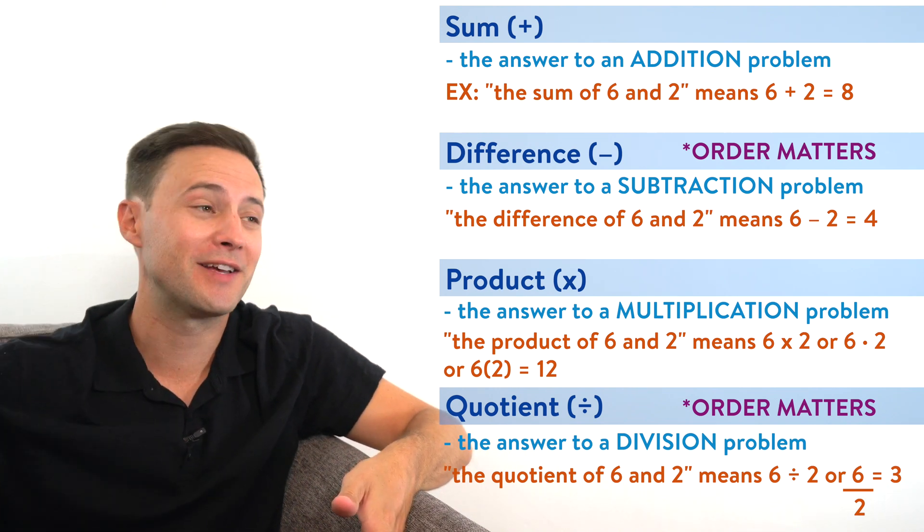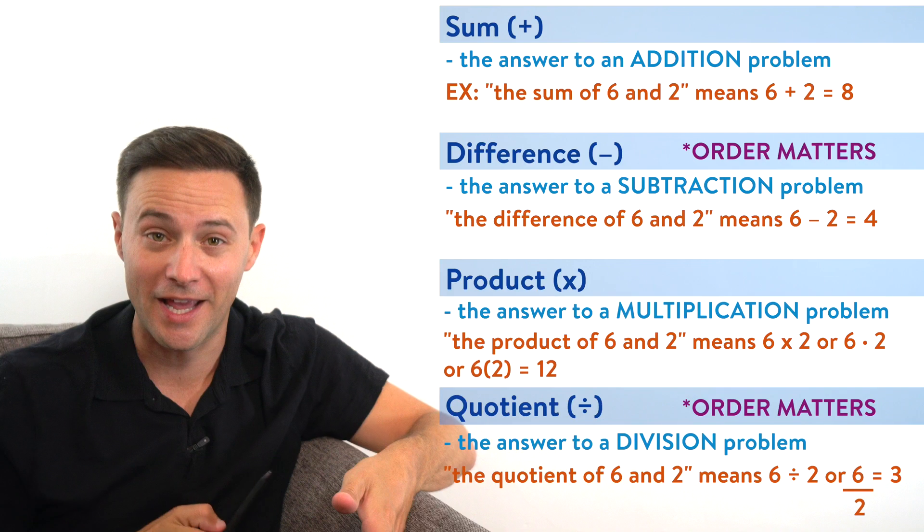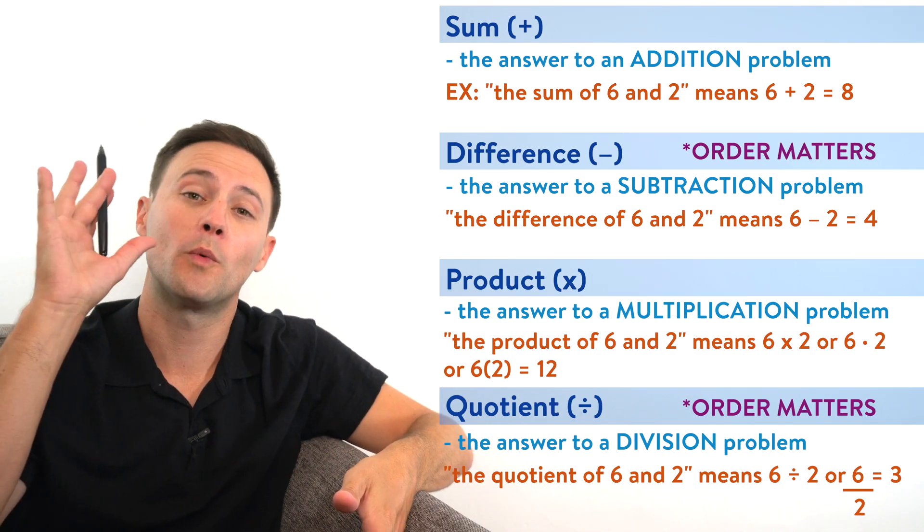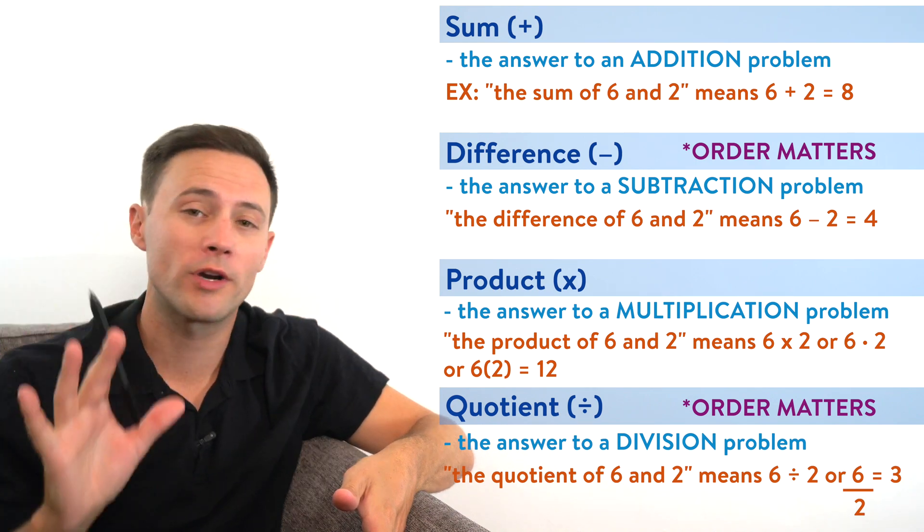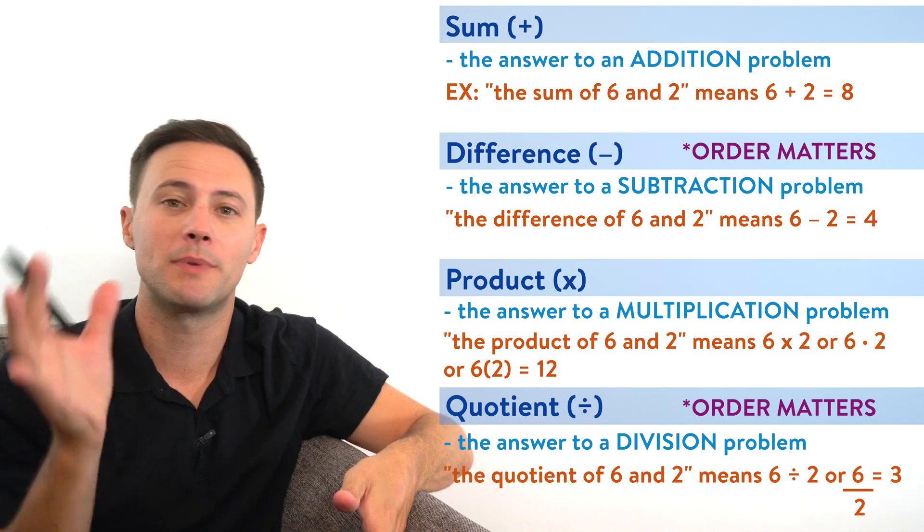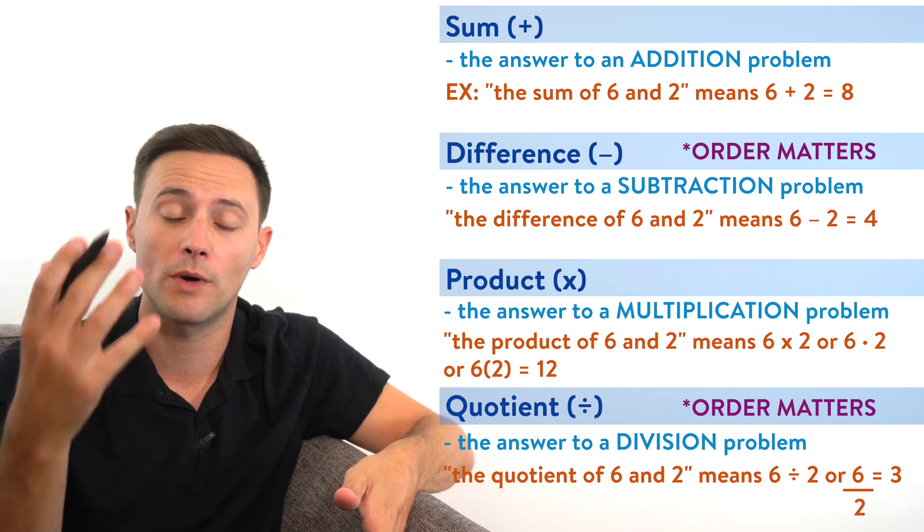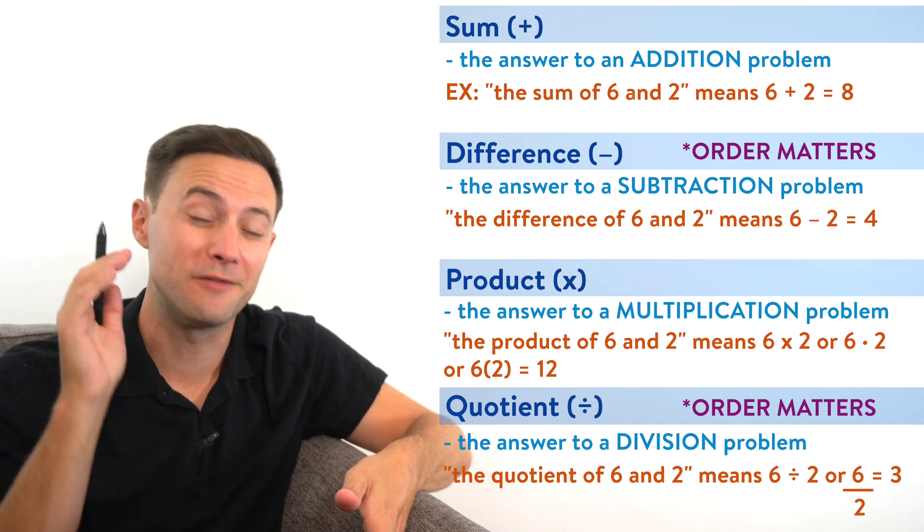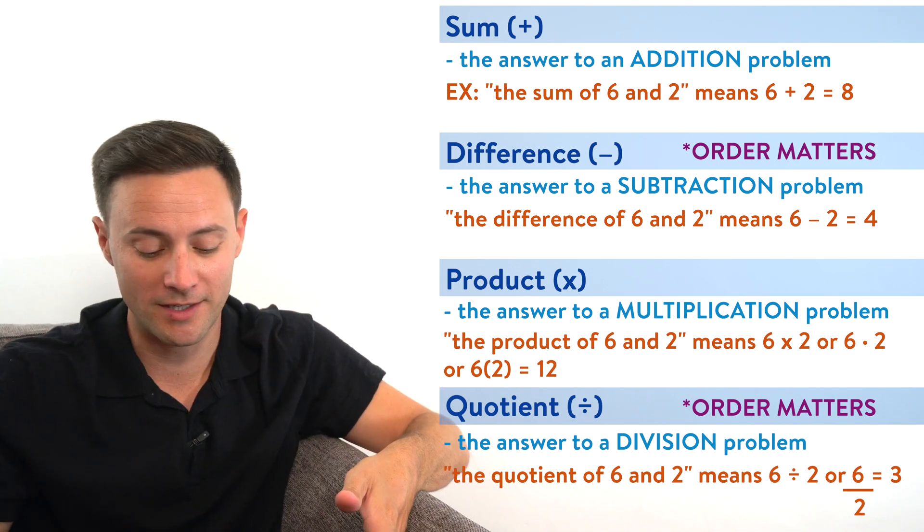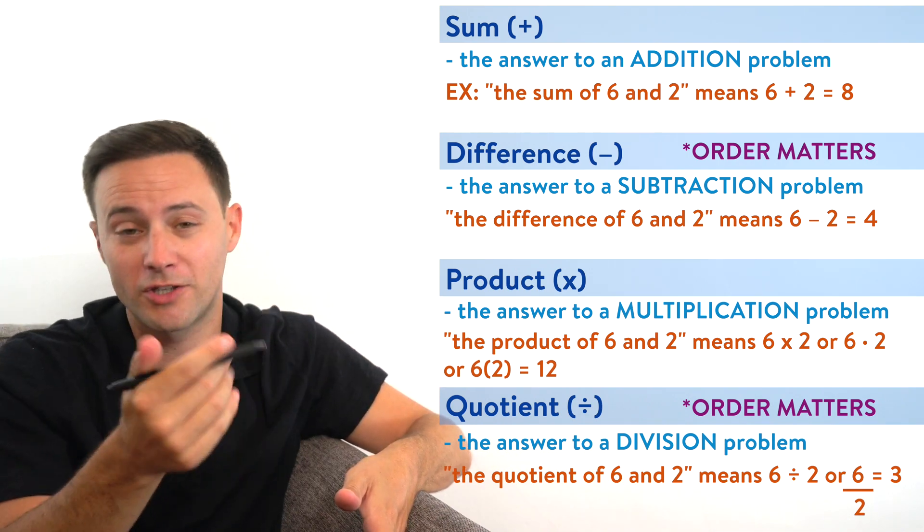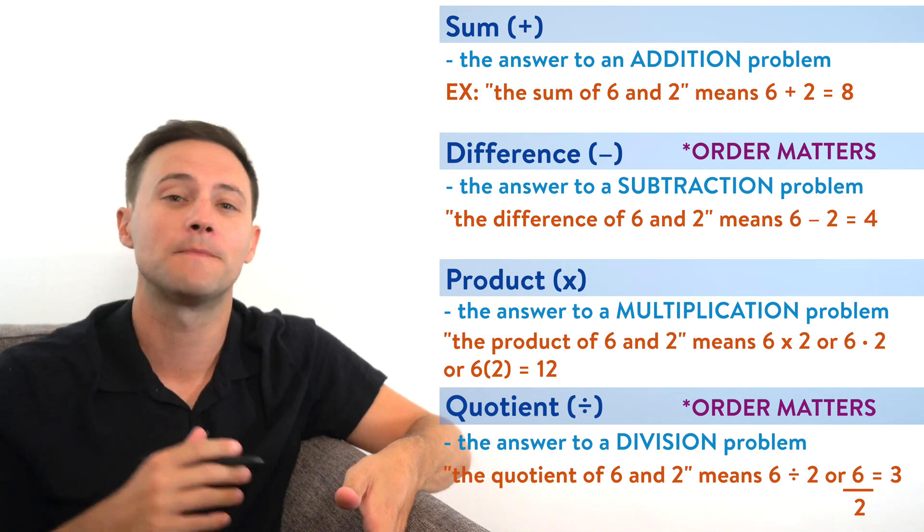So with addition and multiplication, the order doesn't matter. You can change them up. It's okay. It's not going to change what the answer is. But with subtraction and division, keep the order the same. However it's written, whatever comes first, make sure you do that first and then the next number. Now that we understand that, let's get to the first example.